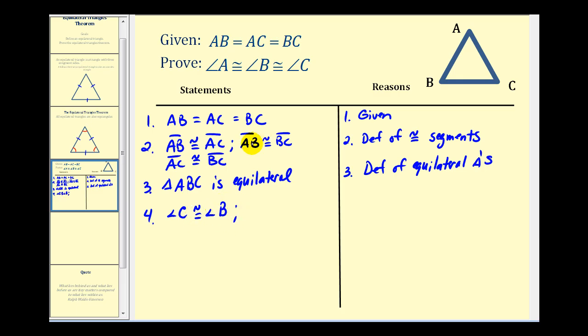It's also true that if side AB is congruent to side BC, angle C is congruent to angle A. And if side AC is congruent to side BC, we know that angle B would be congruent to angle A.